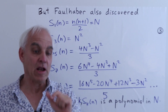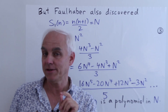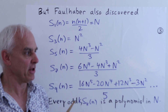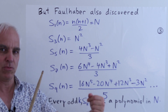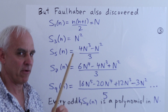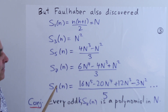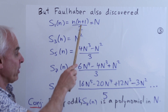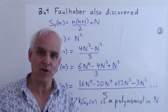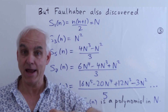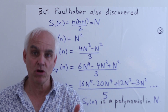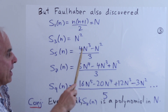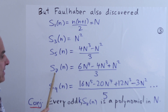Faulhaber did experiment with alternate ways of writing these polynomials, probably motivated by the remarkable observation that S_3, the sum of cubes, is exactly the square of S_1, the sum of natural numbers. So if we write S_1(n) as capital N, then S_3(n) equals capital N squared exactly. This may have motivated Faulhaber to ask whether other polynomials can also be written in terms of capital N, and remarkably he found they could — at least for odd indices.